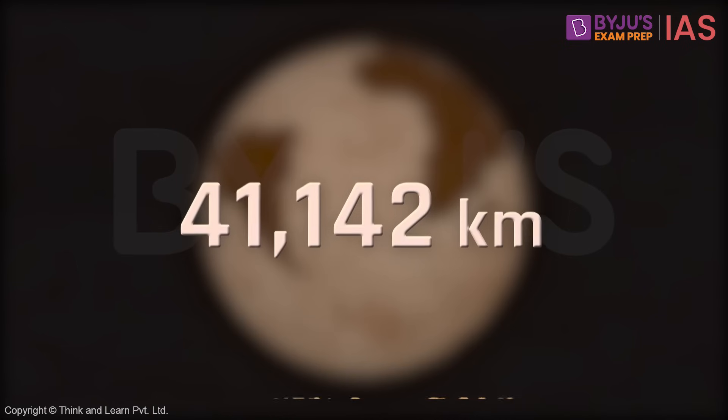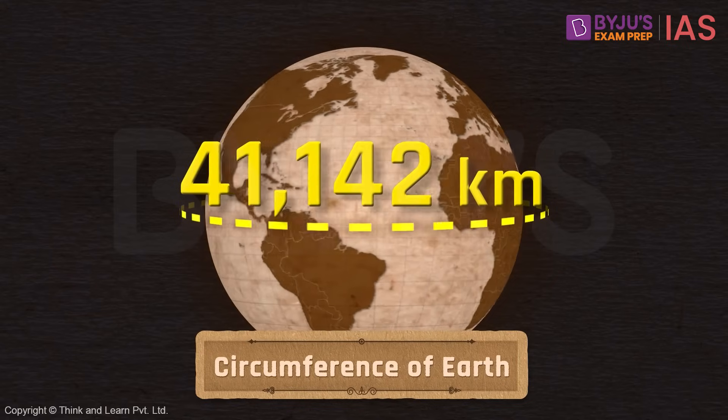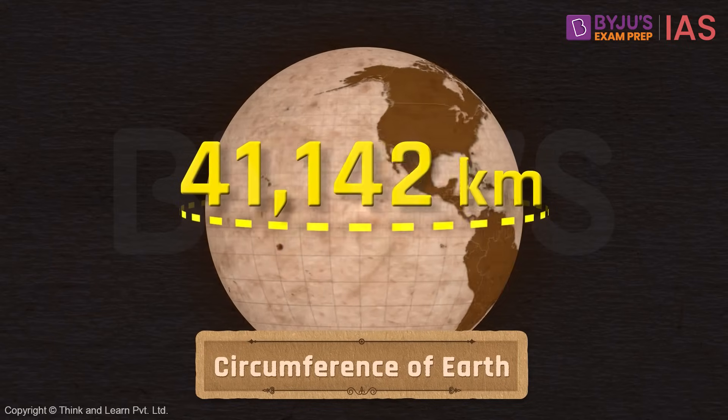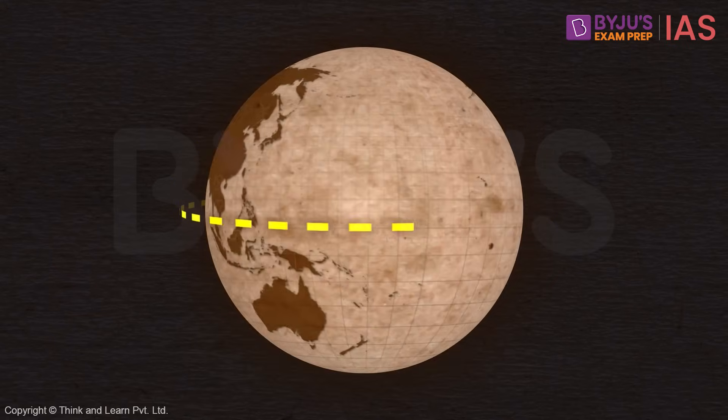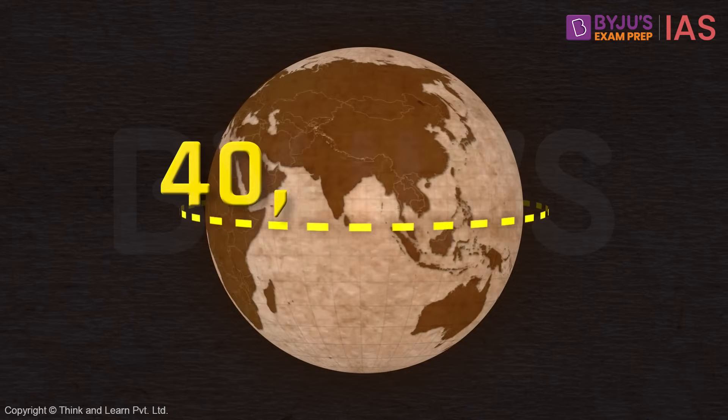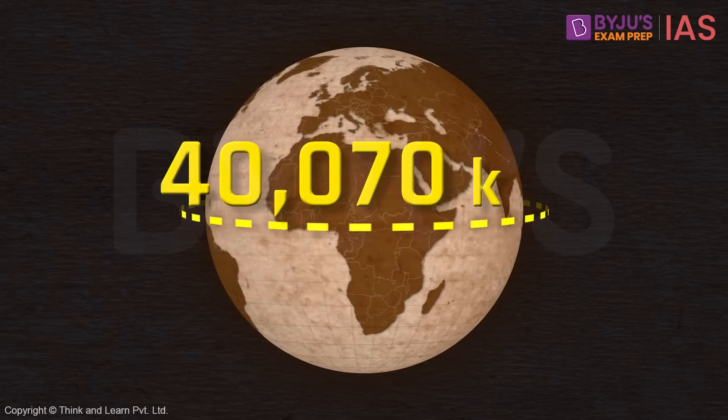Meaning this would be the circumference of the Earth. By modern calculation, now we know that the circumference of Earth is 40,070 kilometers.